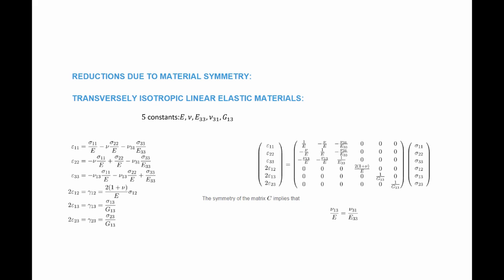For epsilon_11 and epsilon_22, the first two terms look like isotropic linear elastic materials, and even the shear strain epsilon_12 is related to sigma_12 using E and Poisson's ratio, similar to isotropic materials. Whenever the third plane is involved, we get new material constants. When you count the independent constants in this matrix, taking into account that the matrix must be symmetric, you find five independent constants.